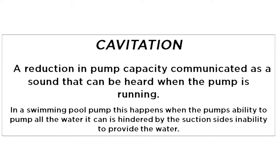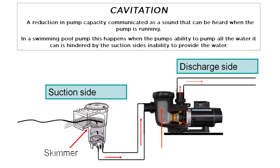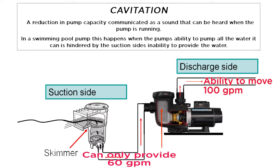Cavitation: in a swimming pool pump, this happens when the pump's ability to pump all the water it can is hindered by the suction side's inability to provide the water. If a pump on the discharge has the ability to move 100 GPM but the suction side can only provide 60 GPM, you have a pump that cavitates. The pump trying to get 100 GPM from the suction side will pull air out of the water, causing bubbles in the pump basket and a noisy pump. This can cause damage to the pump if not corrected.